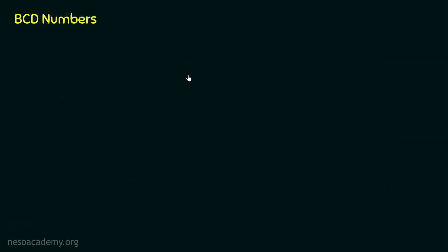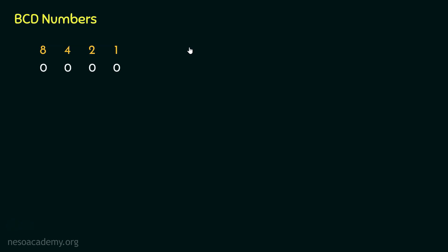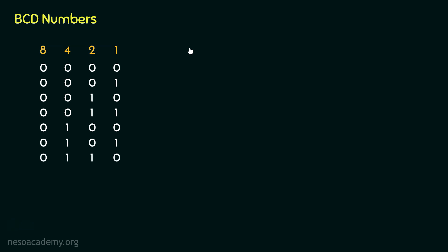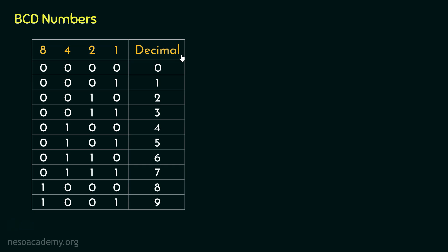In BCD numbers, we take 4-bit binaries. The 4-bit places have place values 1, 2, 4, and 8, corresponding to 2 raised to powers 0, 1, 2, and 3 respectively. Using 4 bits, we generate all the codes representing all 10 decimal symbols. For example, 0000 represents decimal 0, and 0101 represents decimal 5, because 4 plus 1 equals 5. All 10 decimal symbols have been encoded this way.